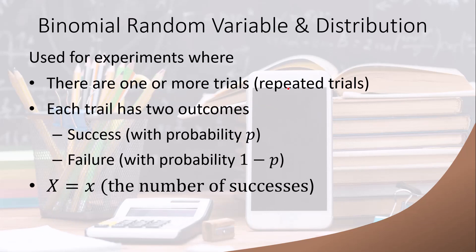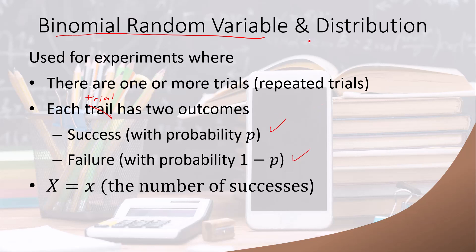What we have done is worked with a binomial random variable. Binomial random variables and their associated distributions are used for experiments with one or more repeated trials where each trial has exactly two outcomes — a success or a failure. They don't have to literally be called success or failure; they just have to be two specific outcomes. If each trial has more than two outcomes, the distribution cannot be binomial. We are interested in computing the probability that X equals a particular number of successes.